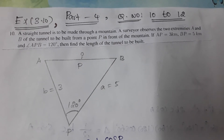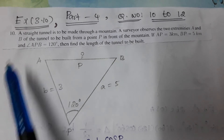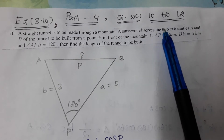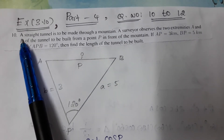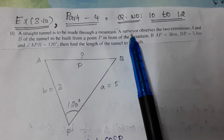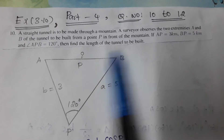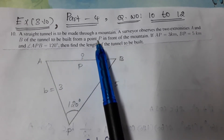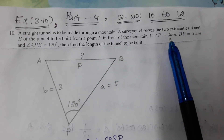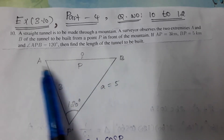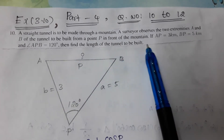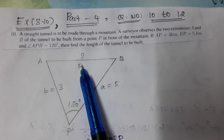Hello friends, welcome to our channel. In this video, exercise 3.10 part 4, question numbers 10 to 12. Problem: a straight tunnel is to be made through a mountain. A surveyor observed two extremes A and B of the tunnel from a point P in front of the mountain. AP = 3 km, BP = 5 km, and angle APB = 120°. Find the length of the tunnel AB.